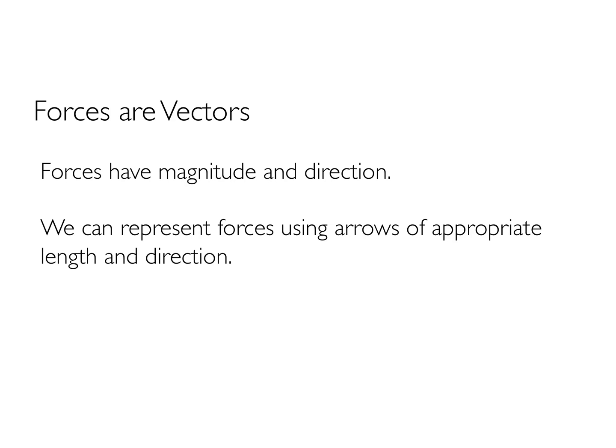What's really cool about forces and vectors in general is that you can represent forces using arrows. Arrows are convenient because you can draw them easily. The way you represent a bigger magnitude is by using an appropriate length. Direction is something which arrows do pretty well — that's what they're for. We're going to figure out how to draw vectors, which gives us immense power when representing the magnitude and direction of forces in any physics example.